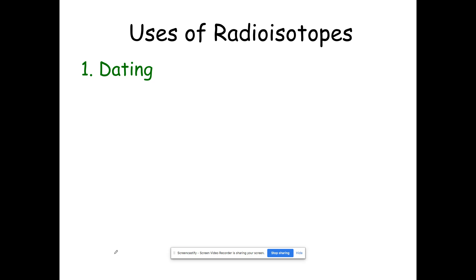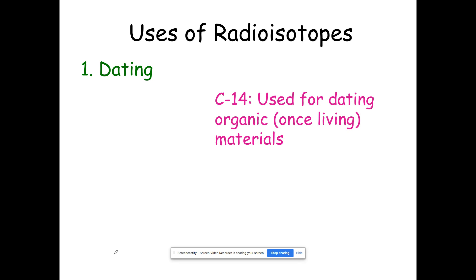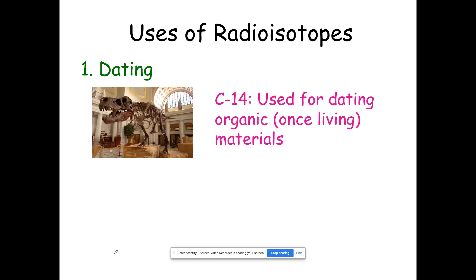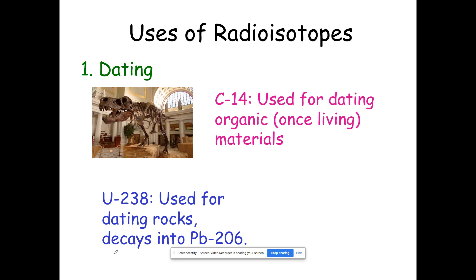The first one you might be familiar with is dating — figuring out the age of items. From biology you know there are living things and non-living things. Things that are living or were living we call organic, and things that were never living are called inorganic. For things that were organic we want to find out how much carbon-14 is left — things like dinosaur bones, fossilized tree rings, anything that was alive at one point. For something like a rock that was never alive, we use uranium-238.